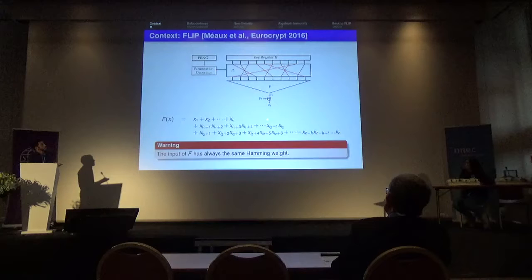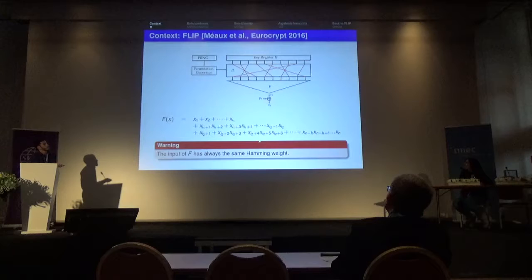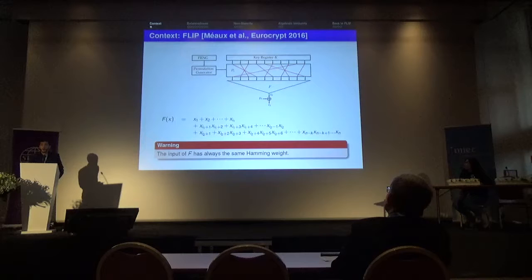The filtering function was chosen with this structure: it has a linear part, a product part, and a so-called triangular part. All three Boolean functions here have nice properties — they are balanced, they have a nice nonlinearity, and the filtering function also has a high algebraic immunity.